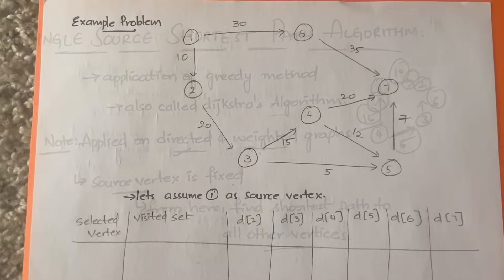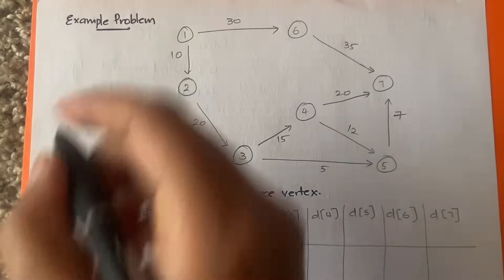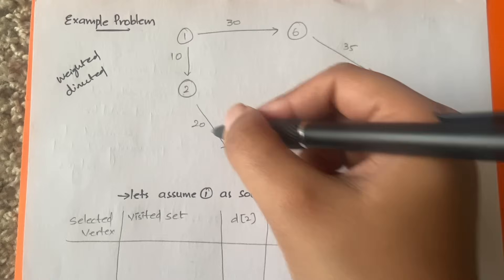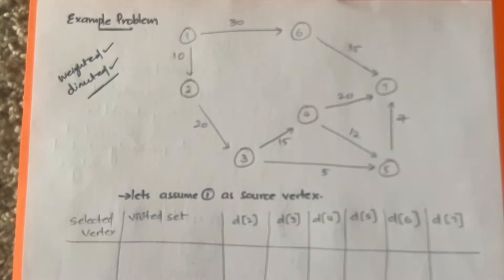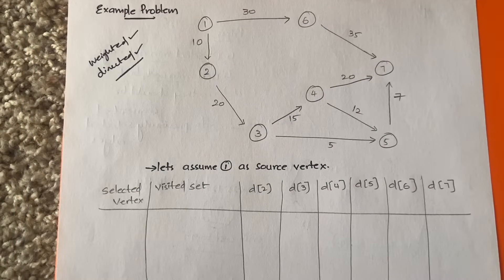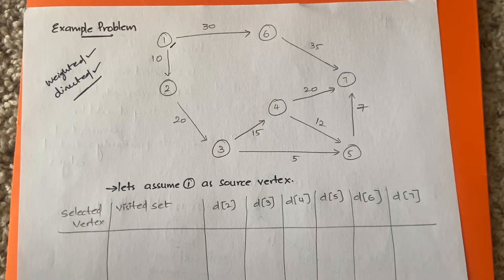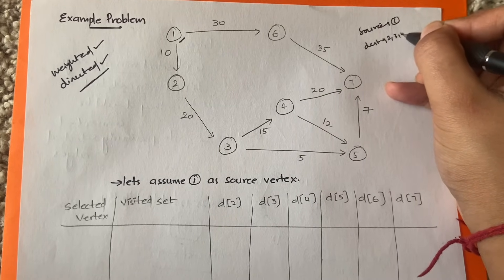Here is the example problem we are going to discuss. This is a graph — it has to be a weighted graph and a directed graph. It has weights like 30, 10, 20, so yes it is a weighted graph, and it also has directions in the form of arrow marks, so it is a directed graph as well. Now we can go ahead and apply the algorithm. We need one source vertex, and from that source vertex we have to find the minimum cost to all the other remaining vertices. In this example, vertex 1 is the source vertex.